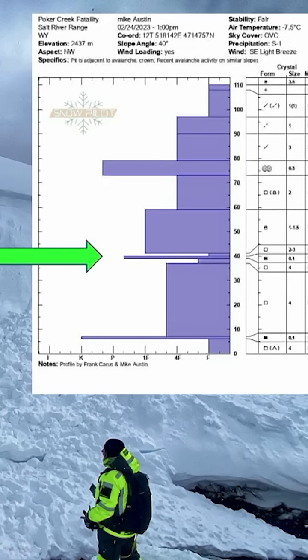So digging snow pits may or may not have helped them understand that this hazard existed, but reading the forecast gave them a clue. So they understood that that was going on, but they weren't finding any evidence that it was an issue.